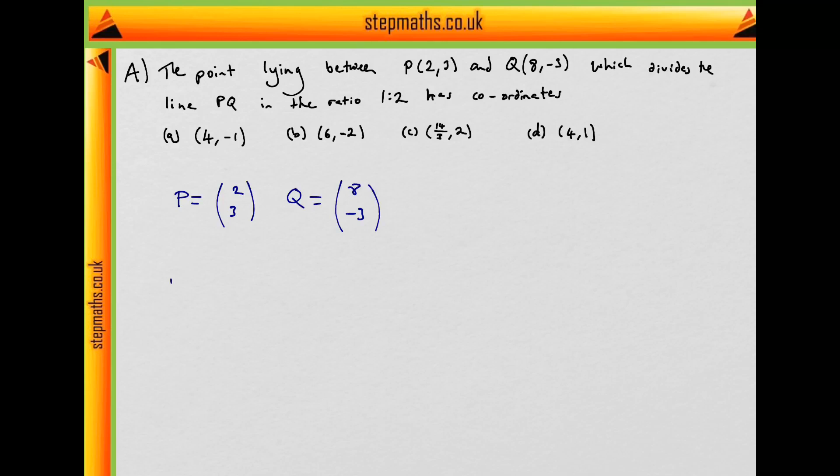Well, what's the direction of PQ? Well, the line between P and Q will be equal to (8, -3) minus (2, 3). So that's the vector PQ minus the vector P.